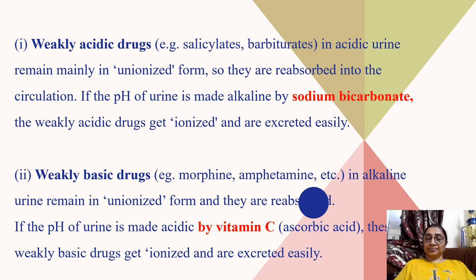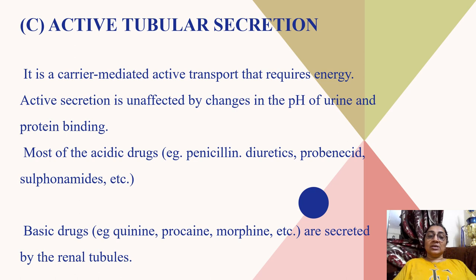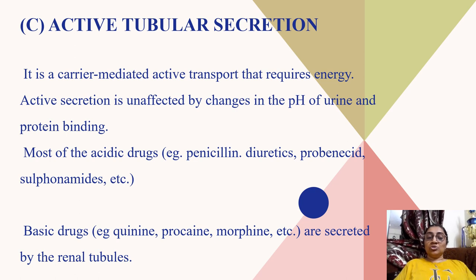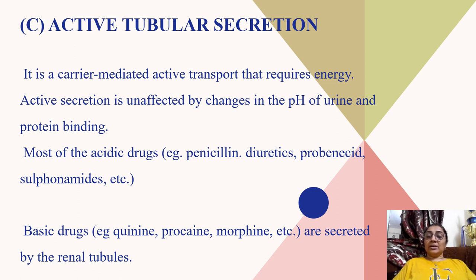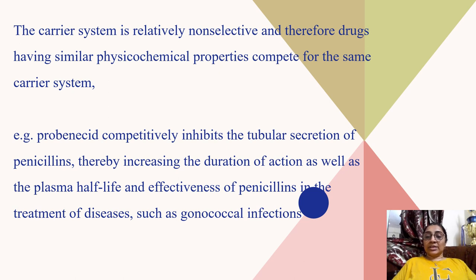Active tubular secretion is a carrier-mediated active transport where the drug is secreted into the tubule from the body or other tissues. The drug requires active carrier-mediated protein transport from tissue to the tubule. Active secretion is unaffected by changes in pH of urine and protein binding. Most acidic drugs like penicillin, diuretics, probenecid, and sulfonamides, and some basic drugs like quinine, procaine, and morphine, are secreted in the renal tubule.